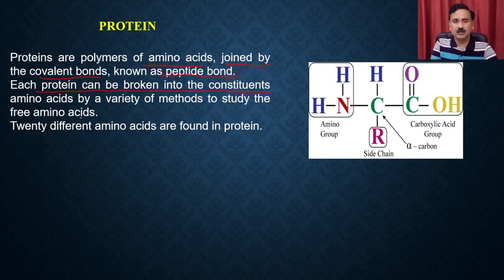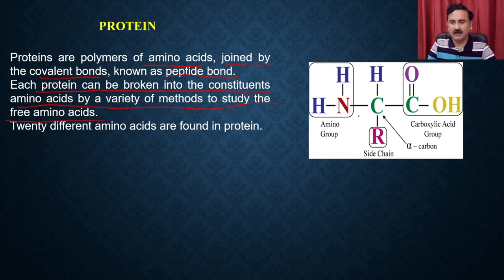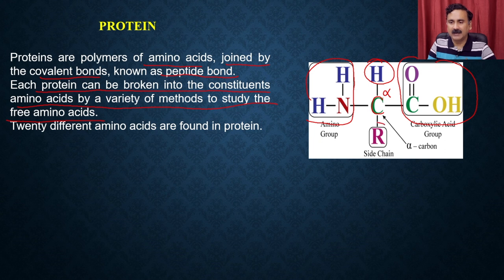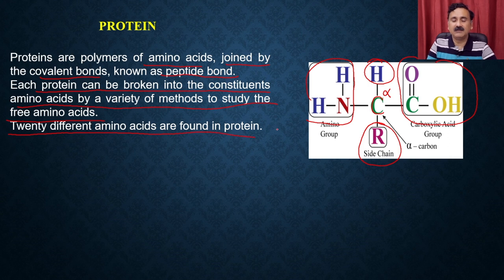Proteins are polymers of amino acids joined by a covalent bond known as the peptide bond. Each protein can be broken into constituent amino acids by a variety of methods to study the free amino acids. The generalized structure of an amino acid has a central C-alpha carbon attached to four groups: an amino group, a carboxyl group, a hydrogen, and a side chain (R group). Depending upon the R group, we can have different types of amino acids. There are 20 different types of amino acids present in proteins.